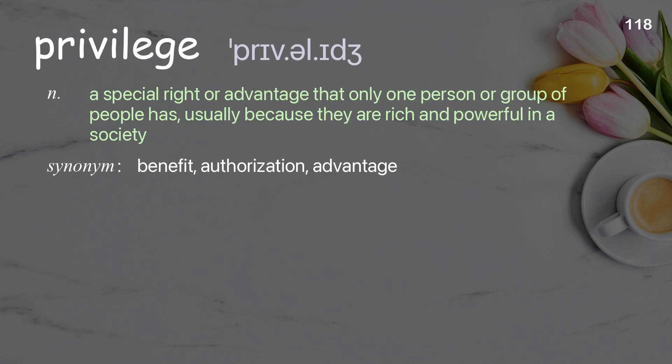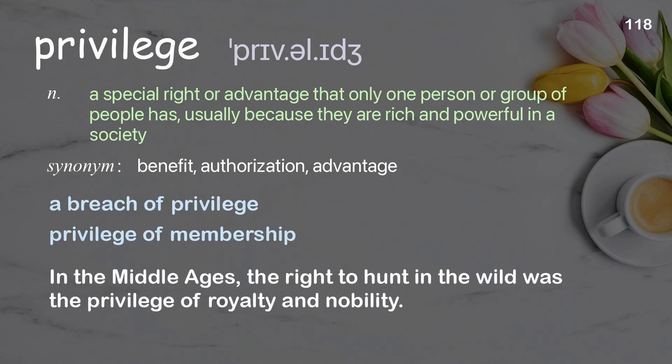Privilege: a special right or advantage that only one person or group of people has, usually because they are rich and powerful in a society. Examples: a breach of privilege, privilege of membership. In the Middle Ages, the right to hunt in the wild was the privilege of royalty and nobility.